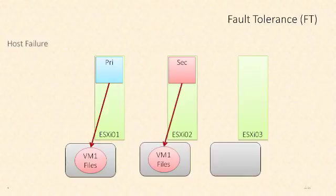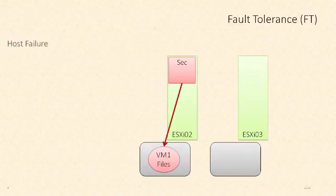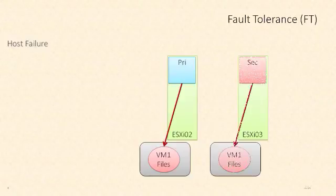Let's walk through a host failure situation. Our primary virtual machine is running on host ESXi 01 with files on one data store, and the secondary VM is running on ESXi 02 with files on a second data store. If host ESXi 01 fails, that primary virtual machine fails along with it, but the secondary will immediately take over and become the primary. A new secondary virtual machine will then be spawned on another host to re-protect that VM.